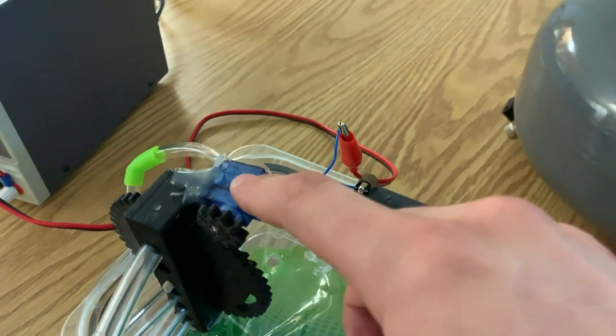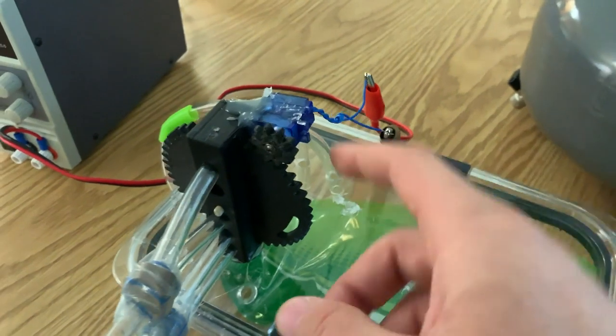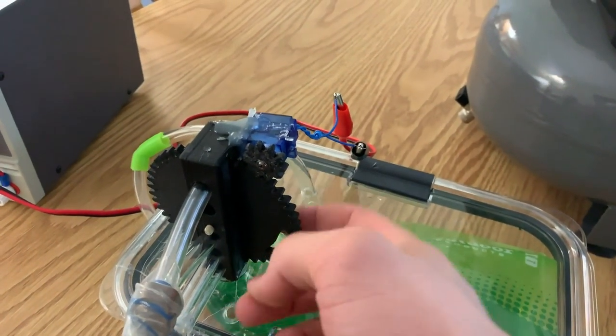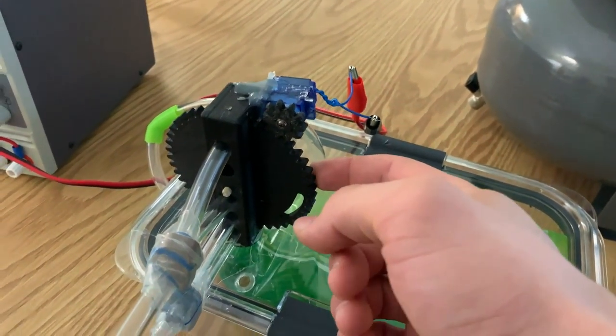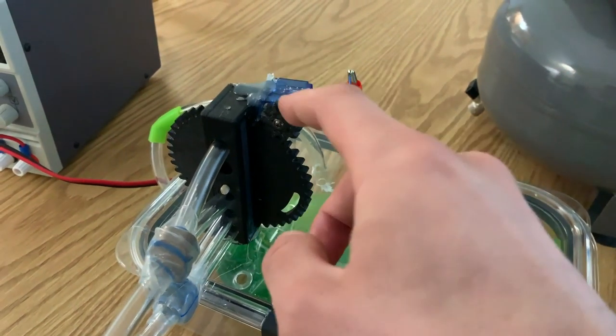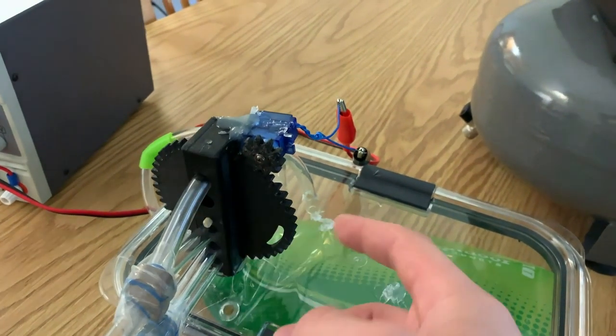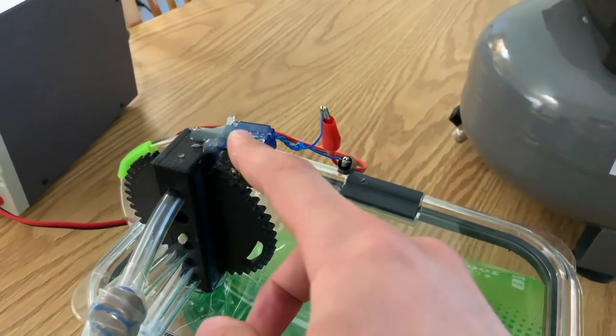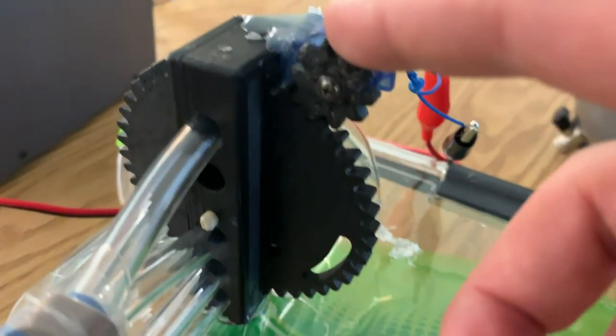This blue part right here is called a servo motor, and it spins this spur gear right here, which controls the opening and closing of the different valves. And these three parts right here, the valve housing, the spur gear, and this little pinion gear, were 3D printed.